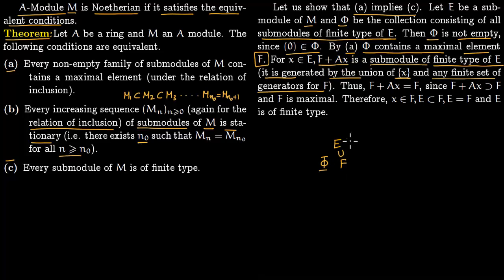Now pick any x in E. Then F + Ax is a submodule of finite type of E, precisely because x is in E and F + Ax is generated by the union of {x} and a finite set of generators for F. Since F is the maximal element of φ — the collection of submodules of finite type of E — and F + Ax is also in φ and contains F, by maximality we must have F + Ax = F.